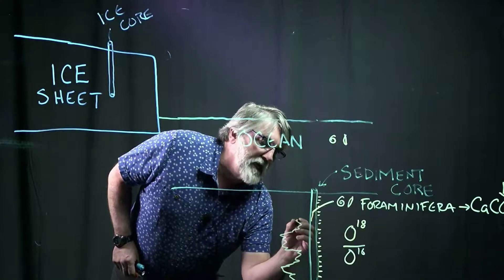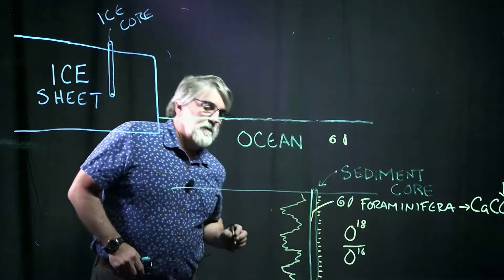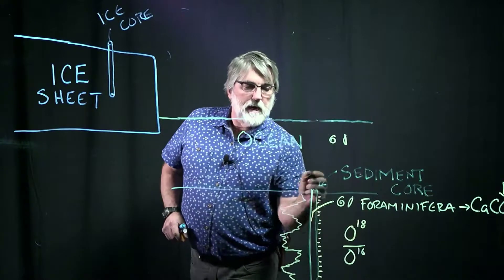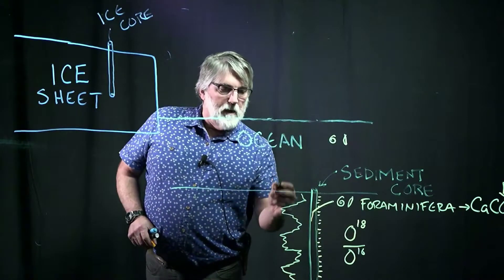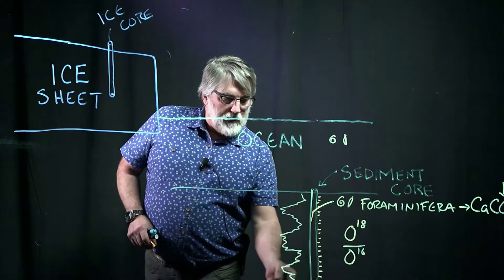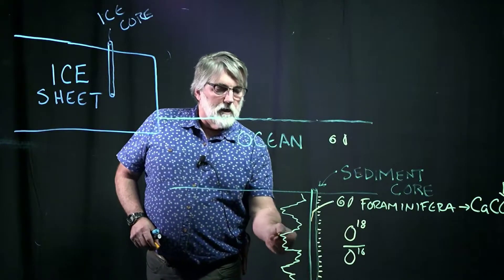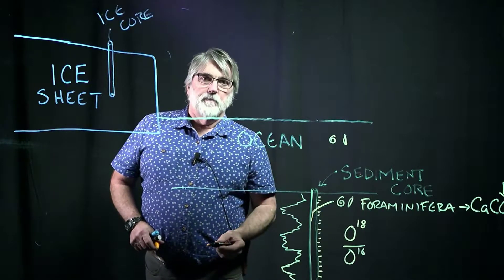And what we wind up with is a plot of that O18 value going up through the core, and it will be some kind of jig jaggedy line like this. So we will get a, from going by depth and the oxygen isotope ratio, we can tell how that oxygen isotope ratio is varying.